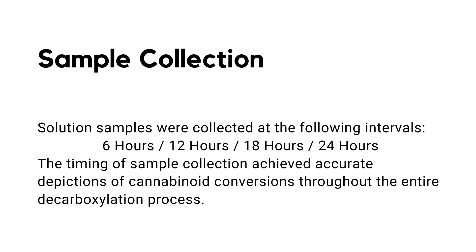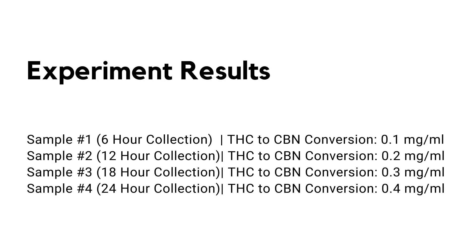Samples were taken off at every six-hour interval. At six hours, it was found that only 0.1 milligrams per milliliter of CBN was found in the solution. And at 24 hours, 0.4 milligrams per milliliter was found. The experiment found that the THC to CBN conversion was so low that it's not worth worrying about. When you're doing a decarb, as long as you're not going over 250 degrees Fahrenheit and you're not doing it for over 24 hours, you're not going to destroy your THC.